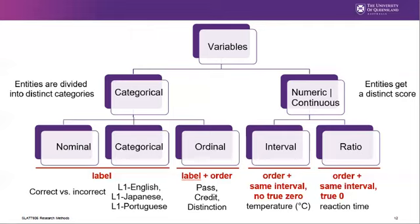With ordinal variables, even though we can determine an order, the interval between those variables does not have to be the same. For instance, if we use a scale of satisfaction for a particular course, the gap between 'highly satisfied' and 'satisfied' might be perceived as closer than the difference between 'satisfied' and 'neutral'.